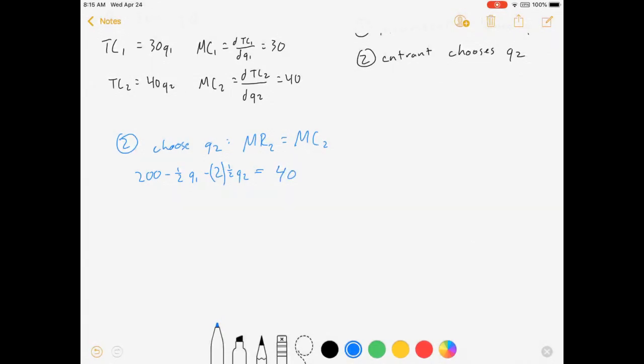So that equal to marginal cost. And let's see, what do we get? We get 160 minus one-half Q1 equals Q2. And this is firm two's best response function. Whatever quantity firm one produces, firm two's response is going to be that. This is the best that they can possibly do.